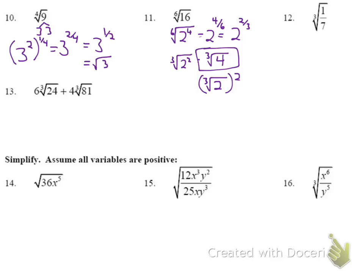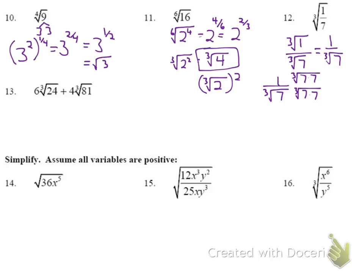Number 12: we're looking at a fraction — the cube root of 1 over the cube root of 7. The cube root of 1 is just 1, so we need to simplify the cube root of 7 in the denominator by rationalizing. We need 2 more 7s to make a group of 3 and take it out of the radical. Multiplying top and bottom by the cube root of 7 squared gives us the cube root of 49 over 7.